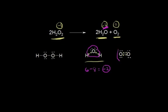We can go ahead and divide up those electrons that way. Oxygen normally has 6 electrons around it, and it is now surrounded by 6. So 6 minus 6 gives you 0 — an oxidation state of 0, which is exactly what we got from the memorization method.